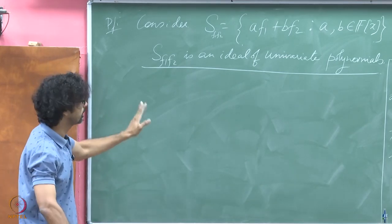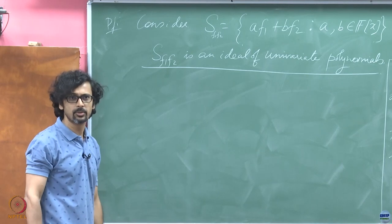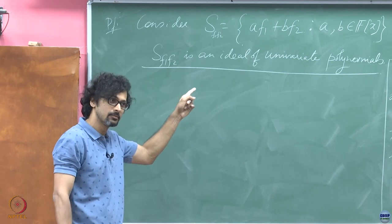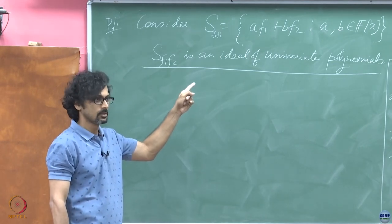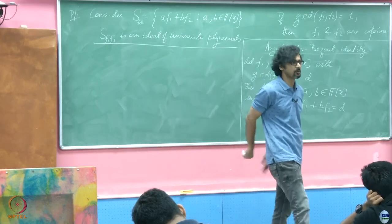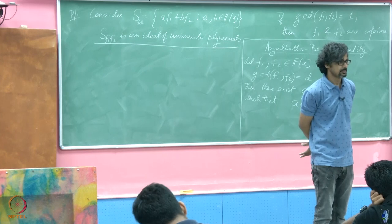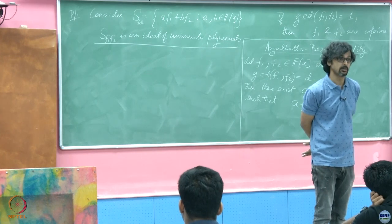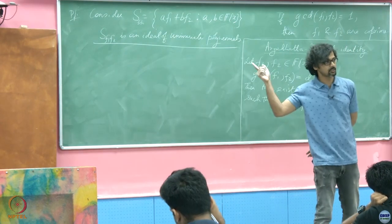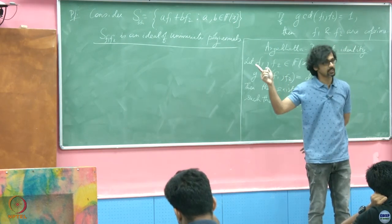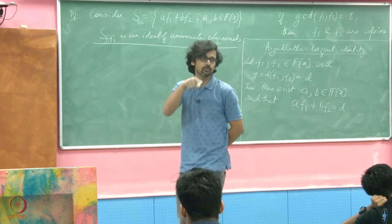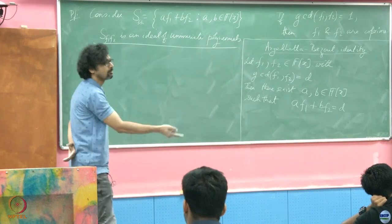We have already discussed ideals of polynomials. So if this is an ideal, what can we say? It is a polynomial ideal. And it is principal because the ring of polynomials is a principal ideal domain. So this ideal must also be a principal ideal — it must be generated by a single element. If you want that single element to be unique, choose the monic polynomial.